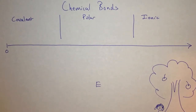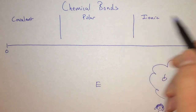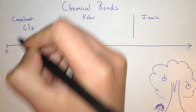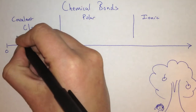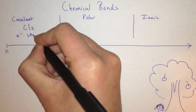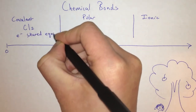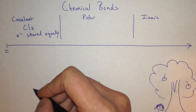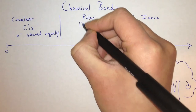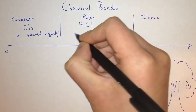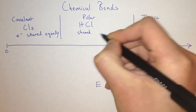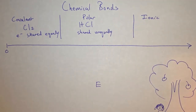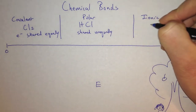There are three kinds: covalent, polar, and ionic. Each one is different. In a covalent bond, for example Cl2, the electrons are shared equally. In a polar covalent bond, the electrons are shared unequally — for example, HCl. And in an ionic bond, we say that the electrons are transferred.